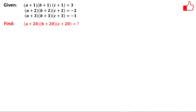Hello friends. In this problem you have been given 3 equations and you have to find the value of a given expression. The first equation is (a+1)(b+1)(c+1) = 3. The second equation is (a+2)(b+2)(c+2) = -2. The third equation is (a+3)(b+3)(c+3) = -1. You have to find the value of (a+20)(b+20)(c+20).